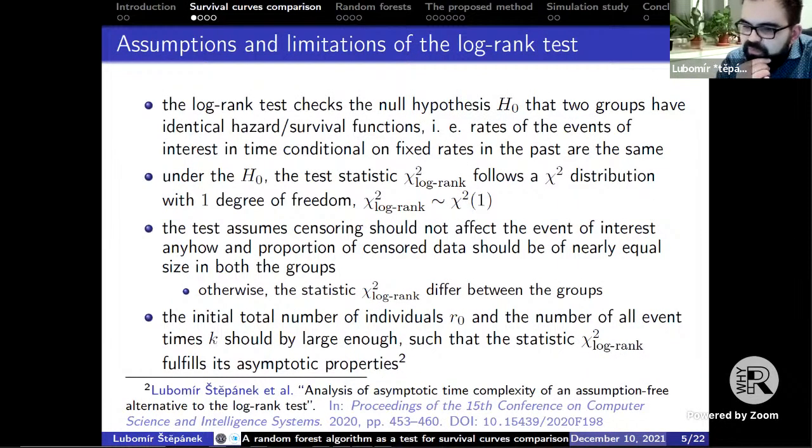Such a variable suggests to be plotted in this kind of two-dimensional chart where usually a number of subjects not experiencing the event of interest to a number of all subjects is posted on a vertical axis at a given time point, while the horizontal axis stands for the time until the event of interest or until the censoring. The log-rank test checks the null hypothesis H₀ that two groups have identical hazard or survival functions.